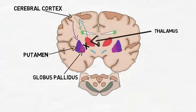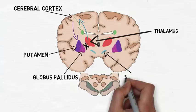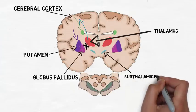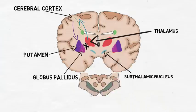There is also a circuit within the basal ganglia called the indirect pathway, which involves the subthalamic nucleus and leads to increased suppression of unwanted movements. It is thought that a balance between activity in these two pathways may allow for smooth movement.